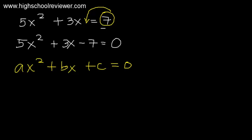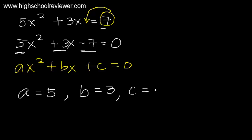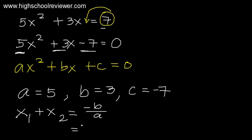So we can now get the values of A, B, and C. A is the numerical coefficient of the first term: positive 5. B is the numerical coefficient of the second term: positive 3. C is the constant: negative 7. For the sum of the roots, x₁ plus x₂ equals negative B over A: negative 3 divided by 5, which gives us negative 3 over 5.